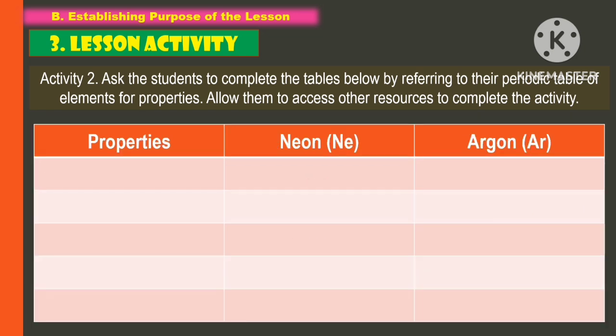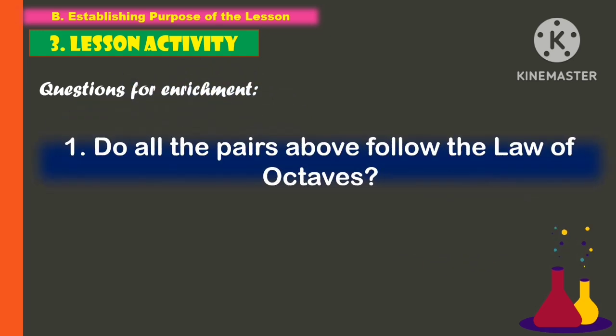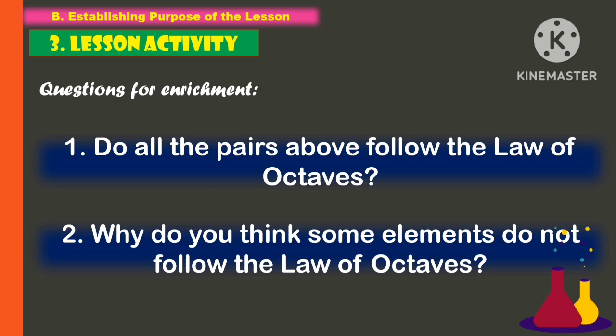For the lesson activity, students will accomplish activity number two. Ask the students to complete the tables below by referring to the periodic table of elements for properties, and allow them to access other resources to complete the activity. Afterwards, students will answer enrichment questions: first, do all the pairs above follow the Law of Octaves? And second, why do you think some elements do not follow the Law of Octaves?